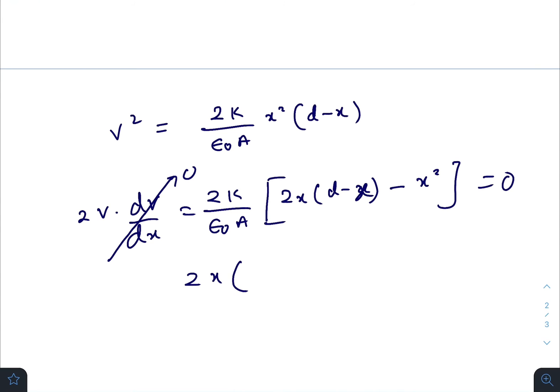So we have 2X(D-X) must be equal to X². So 2D - 2X equals to X, so X equals to 2D/3.